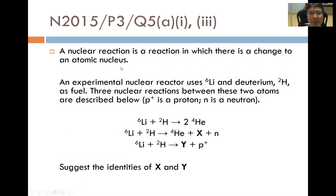5A part 3: a nuclear reaction is a reaction in which there is a change to an atomic nucleus. An experimental nuclear reactor uses lithium-6 and deuterium as fuel. Three nuclear reactions between these two atoms are described below. P+ is a proton and N is a neutron. These three reactions are given and you are asked to suggest the identities of X and Y.